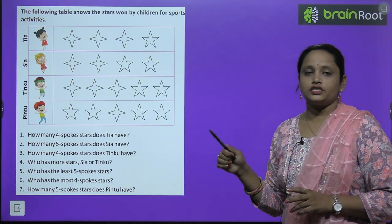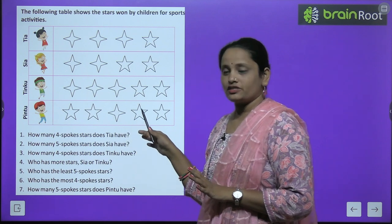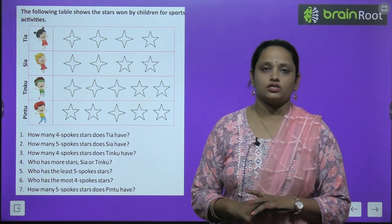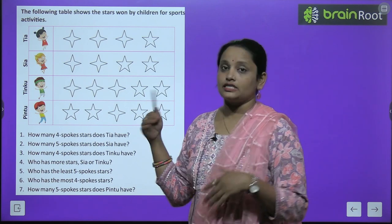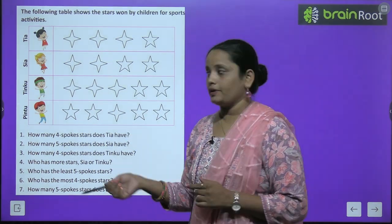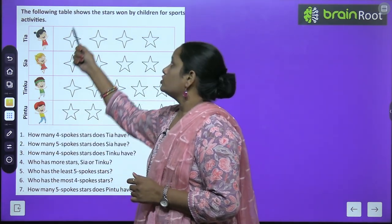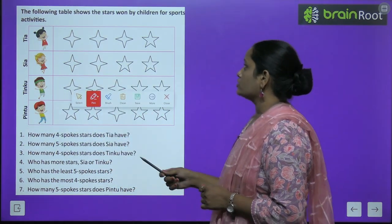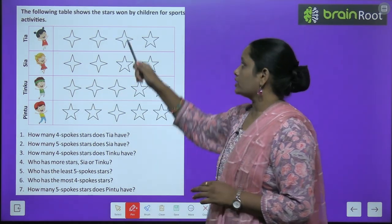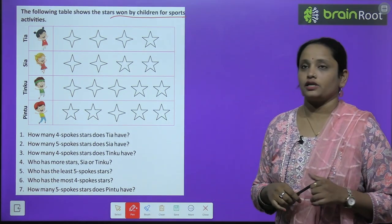So here you can see some pictures. We have to see these pictures, read them, and then answer the questions. In pictures ko dekhna hai, samajhna hai, aur uske according yahan pe in questions ke answers likhne hain. The following table shows the stars won by children for sports activity. Yahan pe ek table hai jisme bachcho ko sports activity mein kuch stars mile hain.